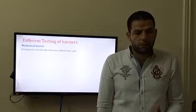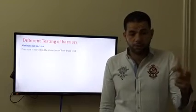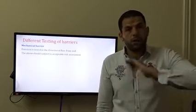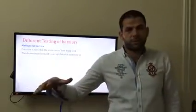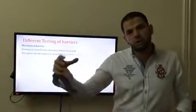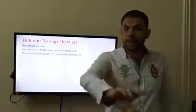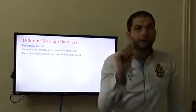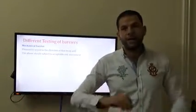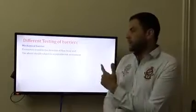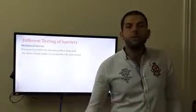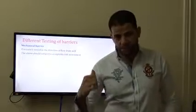The mechanical barrier must be tested in the direction of the flow of the well, and any deviation should be subject to acceptable risk assessment. Risk assessment means that if you are doing something non-standard, you must assess the risk, discuss it with all the crew, document everything, and each person must sign the documents. For example, all BOPs must be tested from the direction of flow — from below. If you test from above, there is no problem, but you must make a risk assessment.